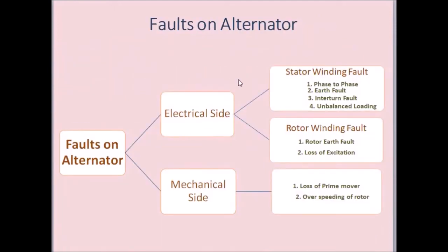Now we will see various faults that can occur on the alternator. The faults on the alternator are divided into electrical side faults and mechanical side faults. On the electrical side, there is a stator winding present on the stator and a rotor winding present on the rotor. The stator winding is a three-phase star-connected winding.